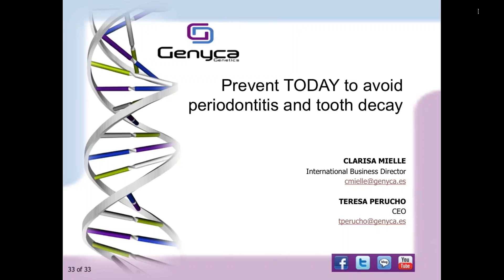Another question: what age is required for a dental genetic study, for example, a tooth decay risk? It is a genetic test, so the results do not vary depending on the age of the patient. The objective is to prevent severe symptoms of periodontitis and quality loss of dental enamel. So the sooner we do the test, the better the specialist can apply preventive measures. These tests can be done on young children.